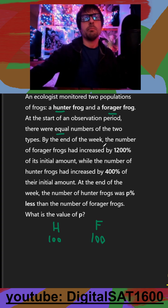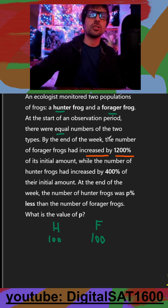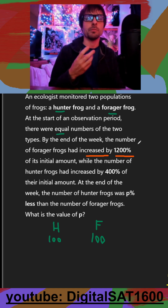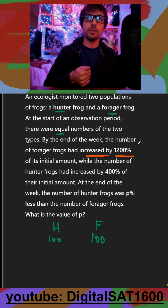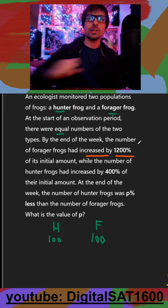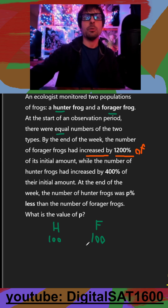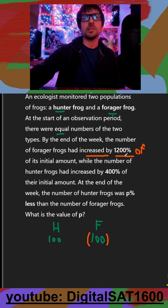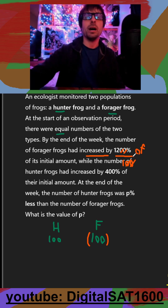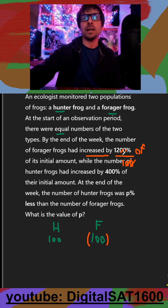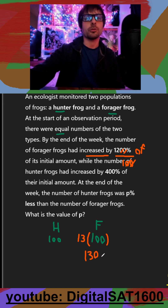By the end of the week, the number of forager frogs had increased by 1,200%. This is a percentage trick they love to do — there are three main types of percent changes: 'of' versus 'more than' and 'increased by.' If it was 1,200% of, you'd multiply by 12 (dividing the percentage by 100). But since it's 'increased by,' you add one and multiply by 13, so forager frogs actually turns into 1,300 total.